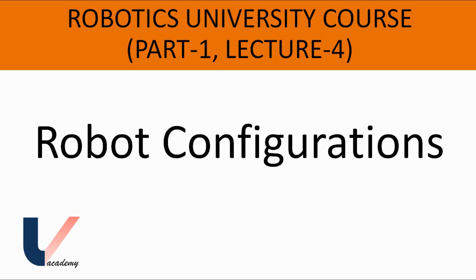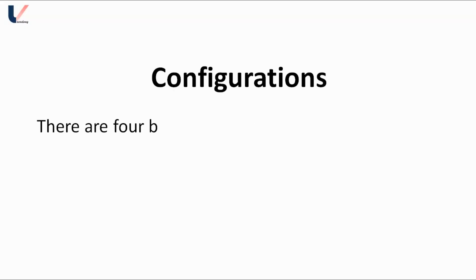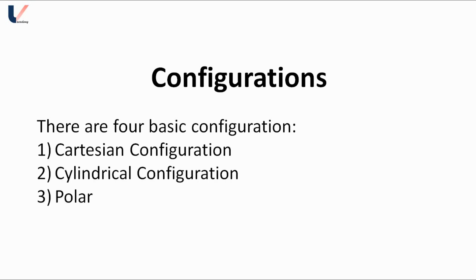Hi, welcome back. In this lecture we will study robot configurations. There are four main types of configuration of a manipulator: Cartesian, cylindrical, polar, and articulated. Apart from these four, we will study one other configuration, SCARA, which is widely used in industries.